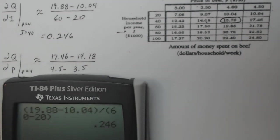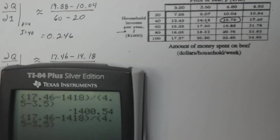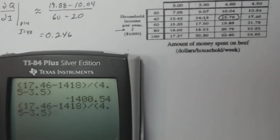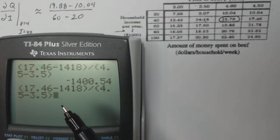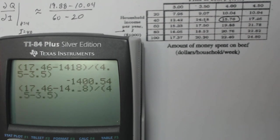So let's do the calculator math with it. 17.46 minus 14.18 divided by 4.5 minus 3.5. Oh, I see. I made a typo. Let's do that again. Sorry. You probably saw that before I did. I need to put a decimal point right there. Okay, so insert a decimal point. I think that's right. So it gives me 3.28.